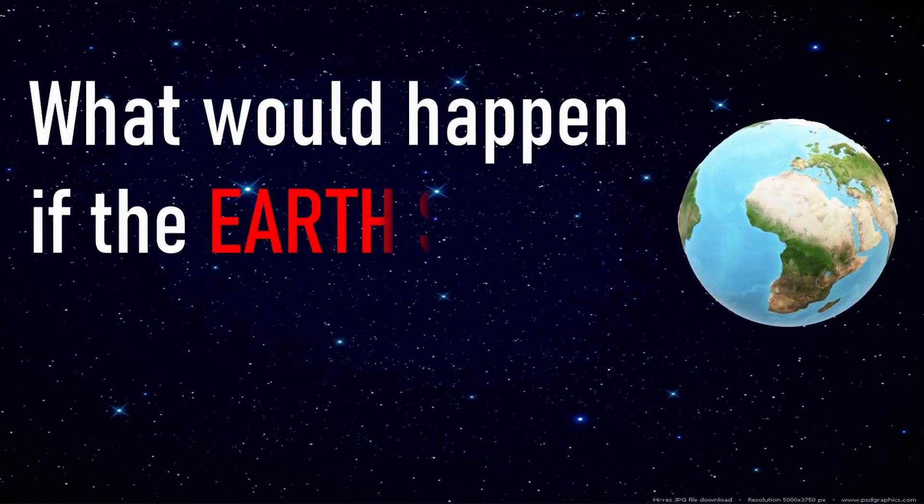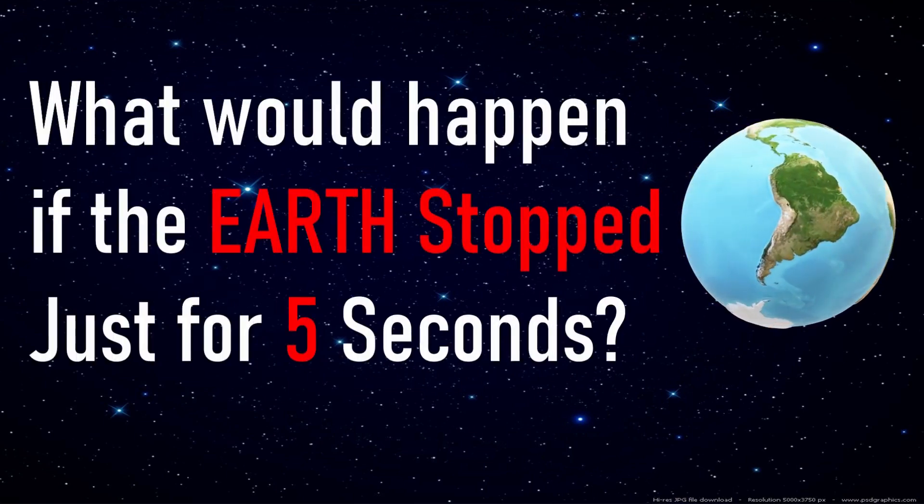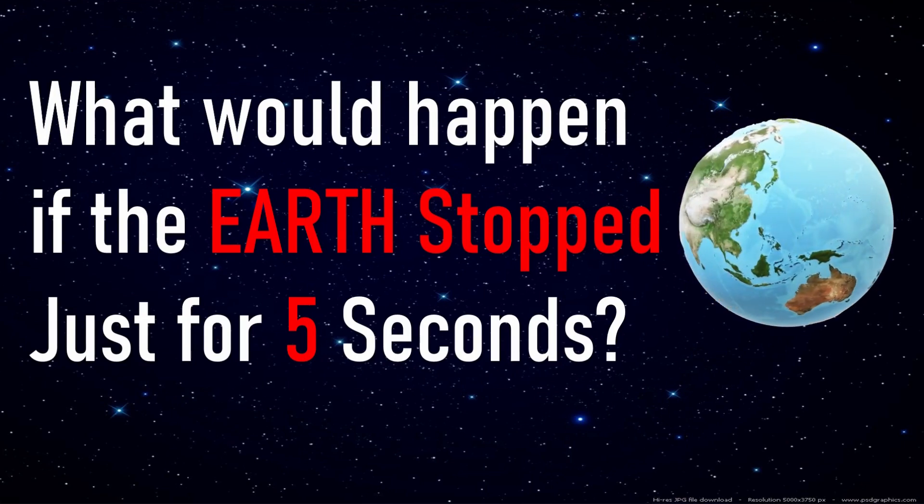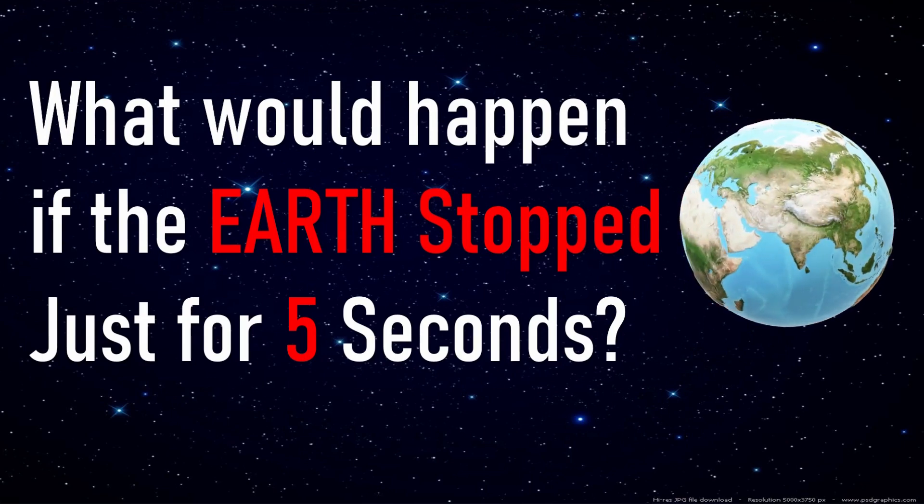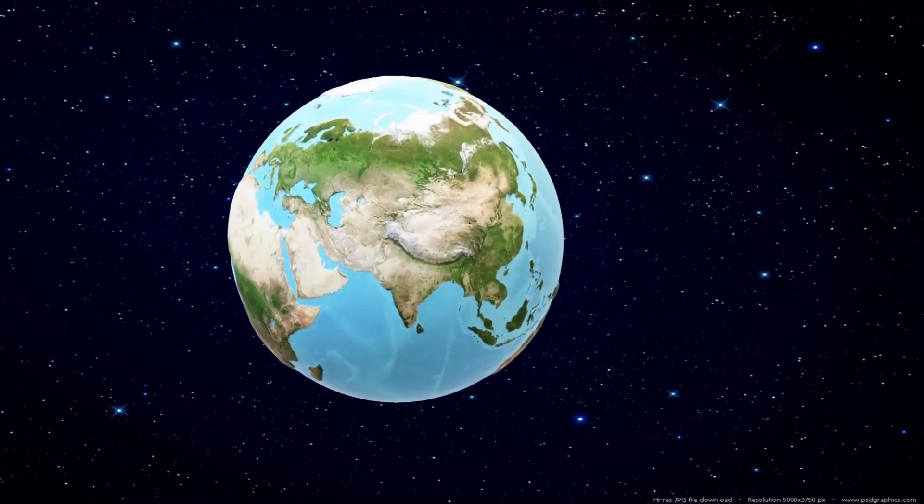Hi students and welcome to Solution In YouTube channel. In today's video we will explore the answer to a question: what possibly can happen if our planet stops rotating for five seconds? The Earth makes one full rotation on its axis in one day, which gives us day and night.